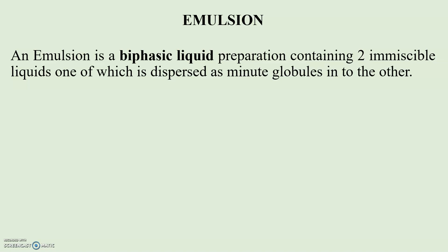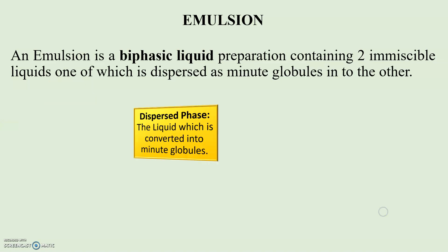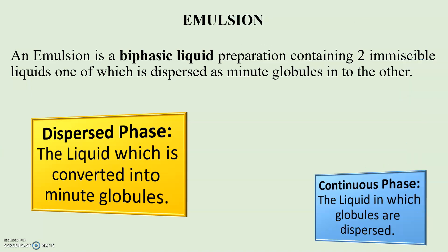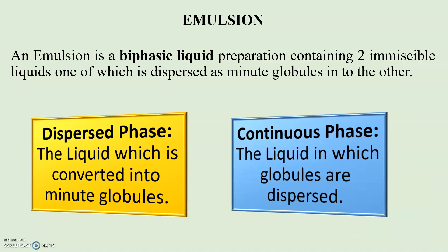As we know, there are two phases in emulsions: dispersed phase and continuous phase. The liquid which is converted into minute globules is called the dispersed phase, whereas the liquid in which globules are dispersed is called the continuous phase.